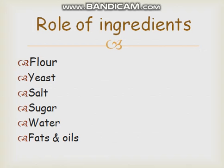The first ingredient is flour. Flour is the main ingredient for bread making. It forms the structure of the product. It contains gluten, which is the protein of the wheat. Gluten helps to form an elastic and stretchy dough.